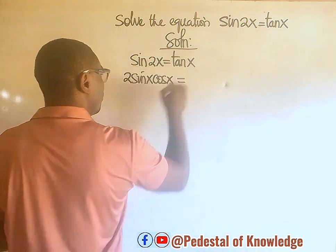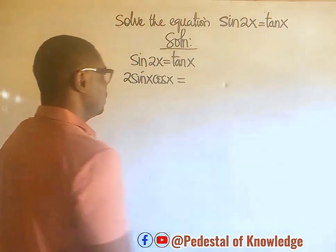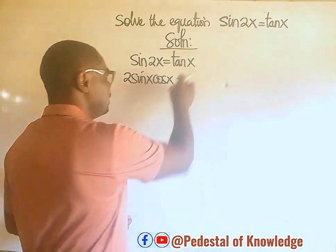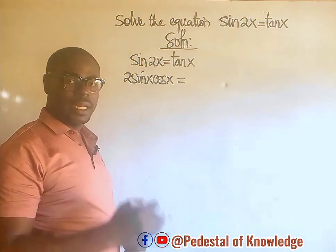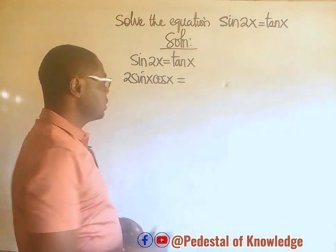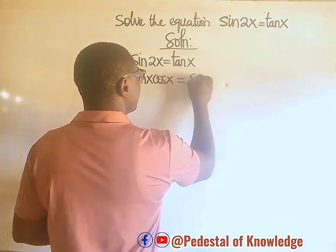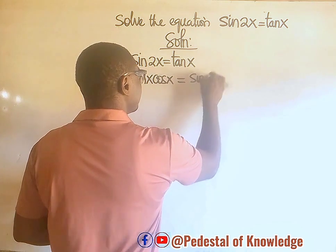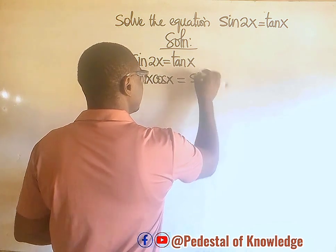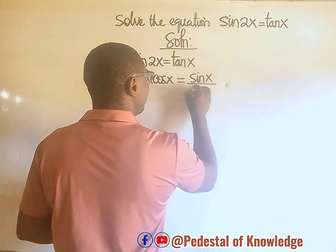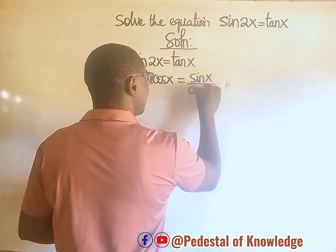This is equal to — now, tan x is the ratio of sine x to cos x. So this is equal to sine x divided by cos x.